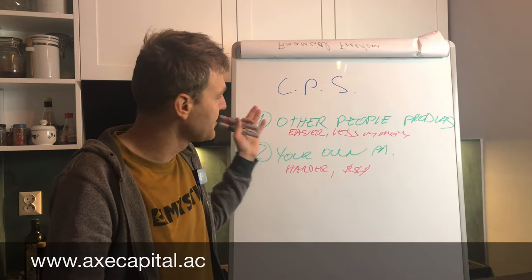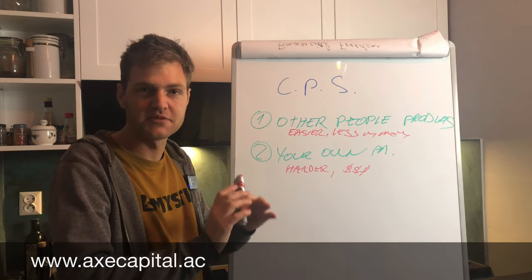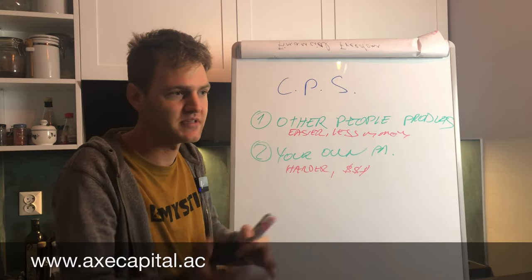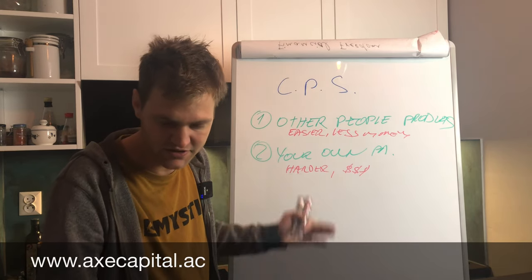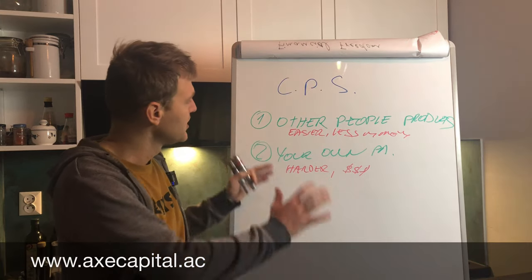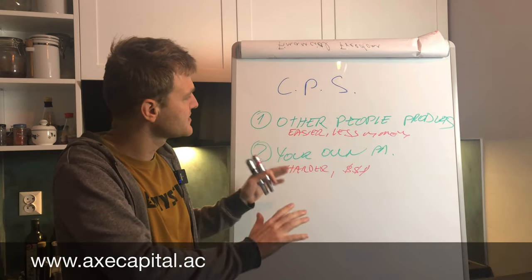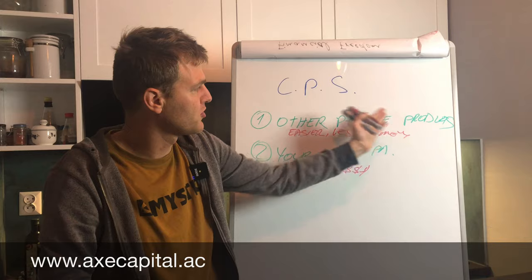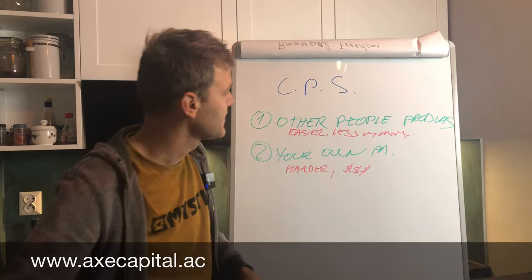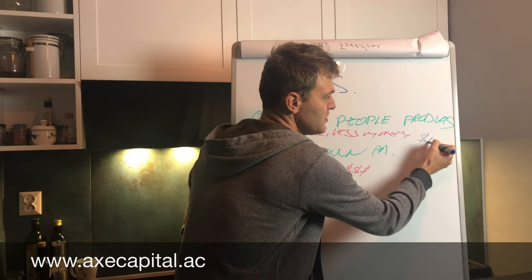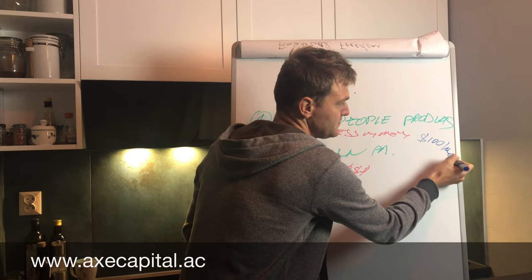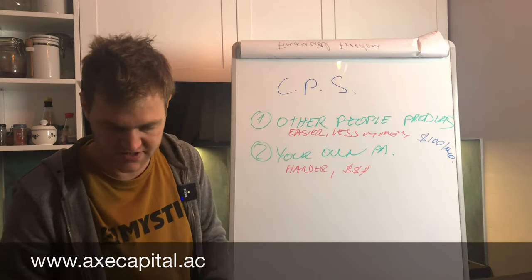Bill Gates also started with other people products. He bought the MS-DOS, he didn't have it, first he sell it. So your goal now is start to promote other people products and start to make like at least 100 dollars or 200 dollars a month. It should be your first target.